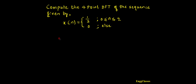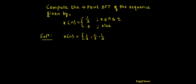So how do I solve this? First let me write the solution and let me also write the given sequence x of n. It is 1/3, 1/3, 1/3 — these are the 3 samples varying from n=0, 1, 2. The 4th sample is going to be 0. For this sequence x of n I need to find its DFT.